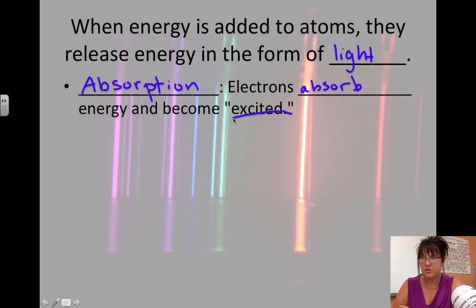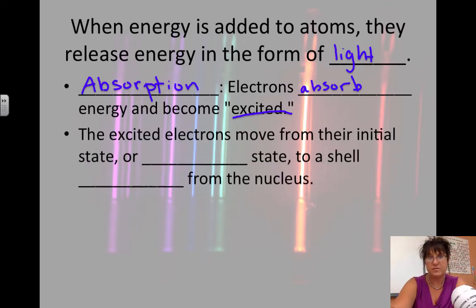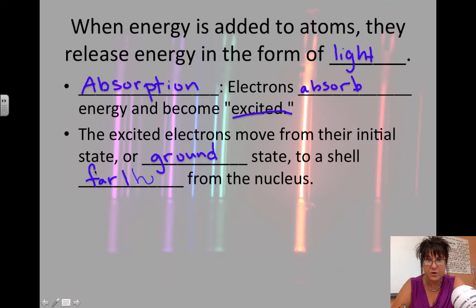Just like when you have too much energy and your parents are like, why are you so excited? The excited electrons move from their initial state or their ground state to a shell that is farther from the nucleus because now they have more energy and that makes them move elsewhere.